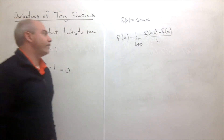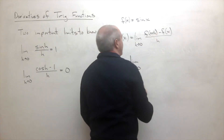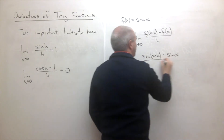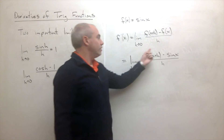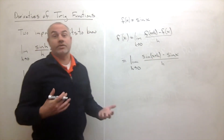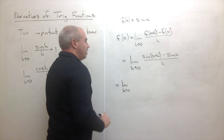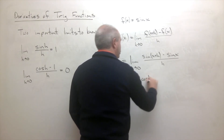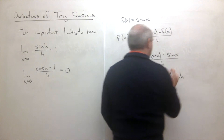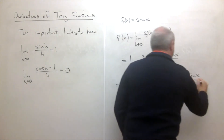Let's fill in what we know. This becomes the limit as h goes to zero of sine of x plus h minus sine of x, all over h. We can use a trig identity to expand sine of x plus h: it becomes sine of x times cosine of h plus cosine of x times sine of h, minus sine of x, all over h.